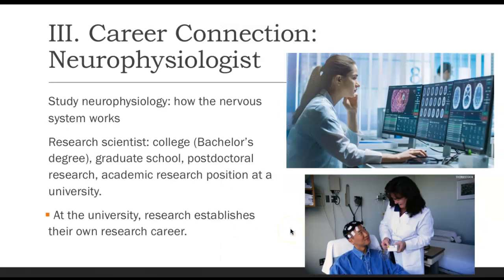Now for a career connection: neurophysiologists study neurophysiology — basically how the nervous system works — and serve as research scientists. To do this, they go to college, get a bachelor's degree, go to graduate school, and typically earn their PhD to conduct this type of research. Then they complete post-doctoral research and pursue an academic research position at a university, where they establish their own research career.